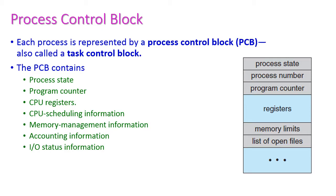Next, let us see the process control block (PCB), otherwise called the task control block (TCB) — both are the same. PCB contains the process state, program counter, CPU registers, CPU scheduling information, memory management information, accounting information, and I/O status information.